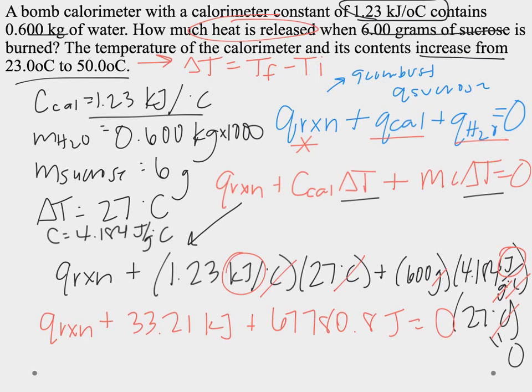So what I did is I pulled Q reaction down. That's what I'm solving for. And then I multiplied C_cal times delta T to get 33. Notice my units in kilojoules.